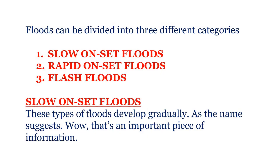Floods can be divided into three different categories: slow onset floods, rapid onset floods, and flash floods. Slow onset floods — these types of floods develop gradually, as the name suggests. Wow, that's an important piece of information.